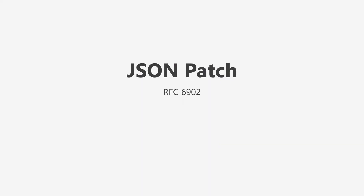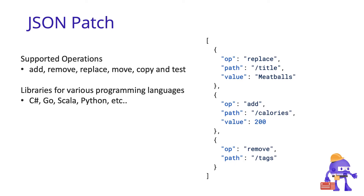There's a spec for that. JSON Patch is a spec that defines how we can issue updates to resources inside of our web APIs, and it's defined in RFC 6902. JSON Patch defines operations such as add, remove, replace, or even move. And if we want to implement this inside of ASP.NET Core, we just have to install a few NuGet packages.